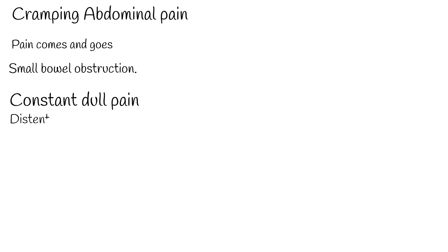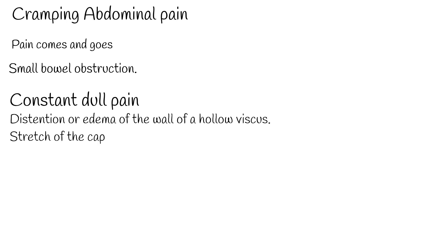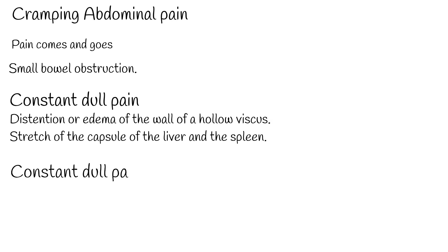Constant dull or aching abdominal pain is usually caused by distension or edema of the wall of a hollow viscus. Such pain can also be caused by stretching of the capsule of the liver or spleen. If constant dull pain is present and is followed by strong, intense pain, it can be gallbladder colic — because when the gallbladder contracts against an obstruction, the stretch of the gallbladder wall is suddenly intensified, producing a crescendo of pain.